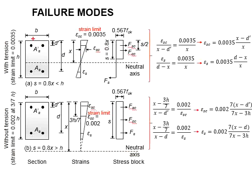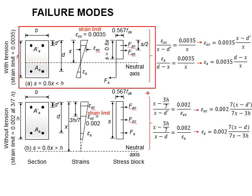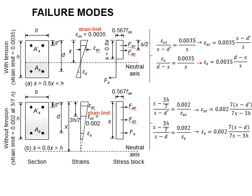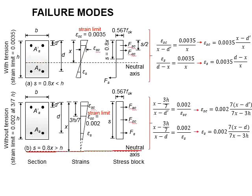The difference between these two cases is the position of the neutral axis — whether it falls within the cross-sections of the columns or outside the cross-sections of the columns.